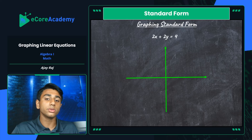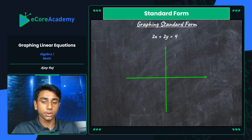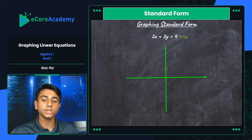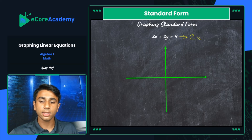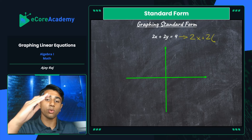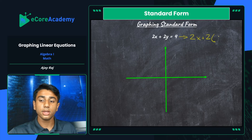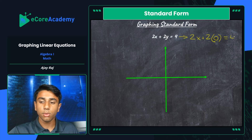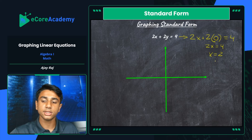The x-intercept is when y equals zero, and the y-intercept is when x equals zero. First, we calculate for the x-intercept: plug in zero for y. We get 2x plus 2 times zero equals 4, so 2x equals 4, meaning x equals 2. Since x equals 2 and y equals zero, our x-intercept is the point 2 comma 0.